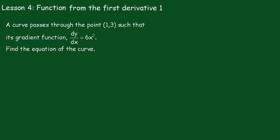A curve passes through the point (1,3) such that its gradient function dy/dx equals 6x squared. We have to find the equation of the curve.